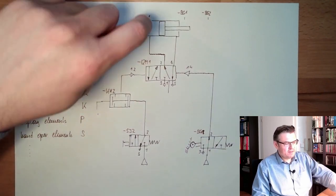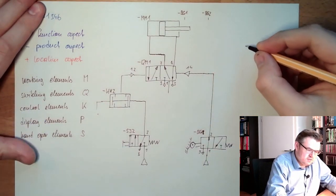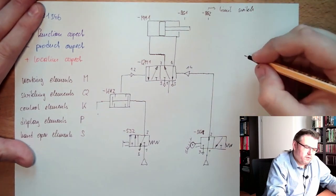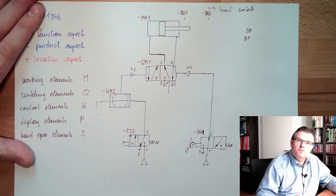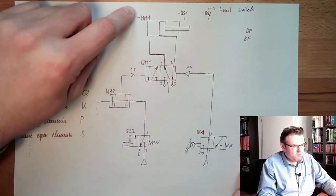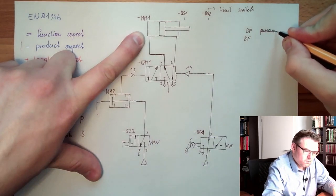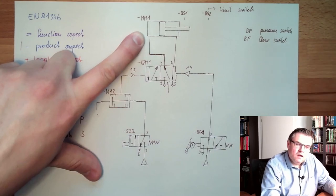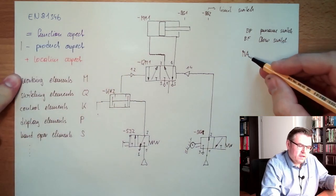Now what is the second letter? The second letter shows a little bit further what it is. For instance, this BG here is a limit switch, second G limit switch. There would also be for instance BB, that's a pressure switch, or there would be BF, a flow switch. So the second letter shows a little bit more in details. For instance here MM, that's a hydraulic cylinder. MA, electrical motor.